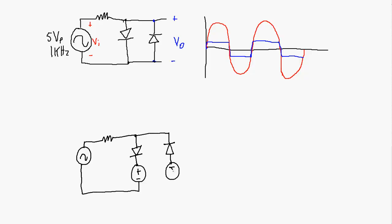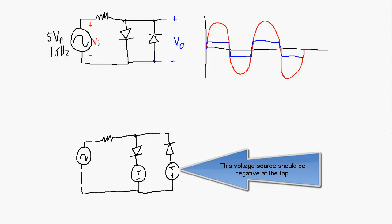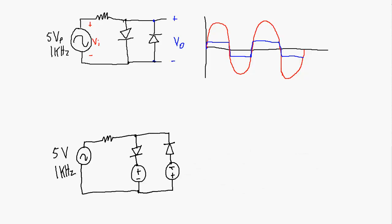Along with a DC biasing offset, we're going to have our 5-volt input signal again at 1 kilohertz, although the frequency doesn't really matter much here. What is important are these two offsets: the first one is going to be at 1.3 volts, and the second one is going to be at 2.3 volts, but since it's in the opposite orientation, relative to the first it's negative 2.3 volts. The output is in blue (V out) and the input in red is what's applied by this sinusoidal source.